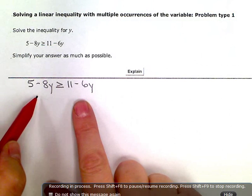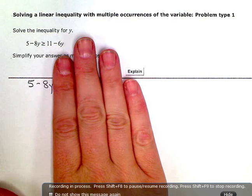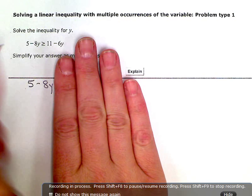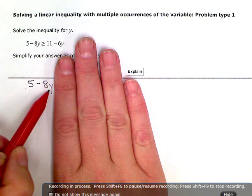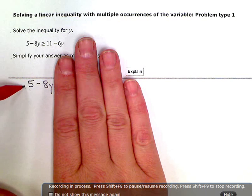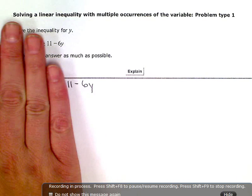So, the first thing I want to do is look at each side separately, and just make sure that they're completely simplified. And here I have two terms, a variable term and a constant term. They're not like terms. I can't combine anything. I don't have any parentheses to distribute. So, this is as simplified as it's going to get.